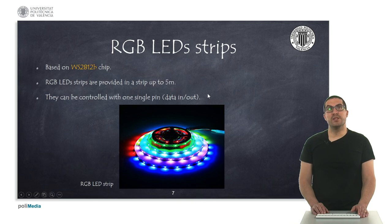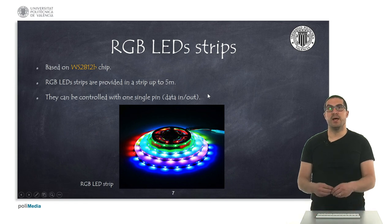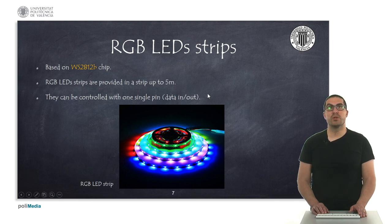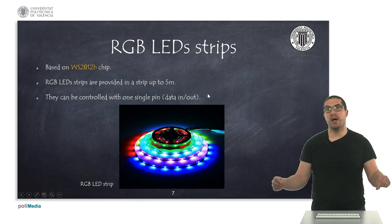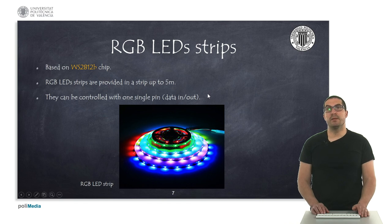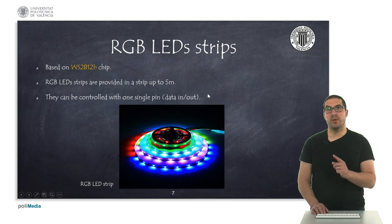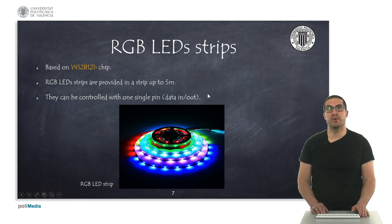The RGB LED strips are a very interesting option if you want to provide different kinds of illumination settings for your project. They are based on the WS2812B chip and are provided as a strip — connected one after another — and can be up to five meters long. The main advantage is that they can be controlled with just one digital pin, so with one digital pin you can generate a lot of colors with your LED strip.